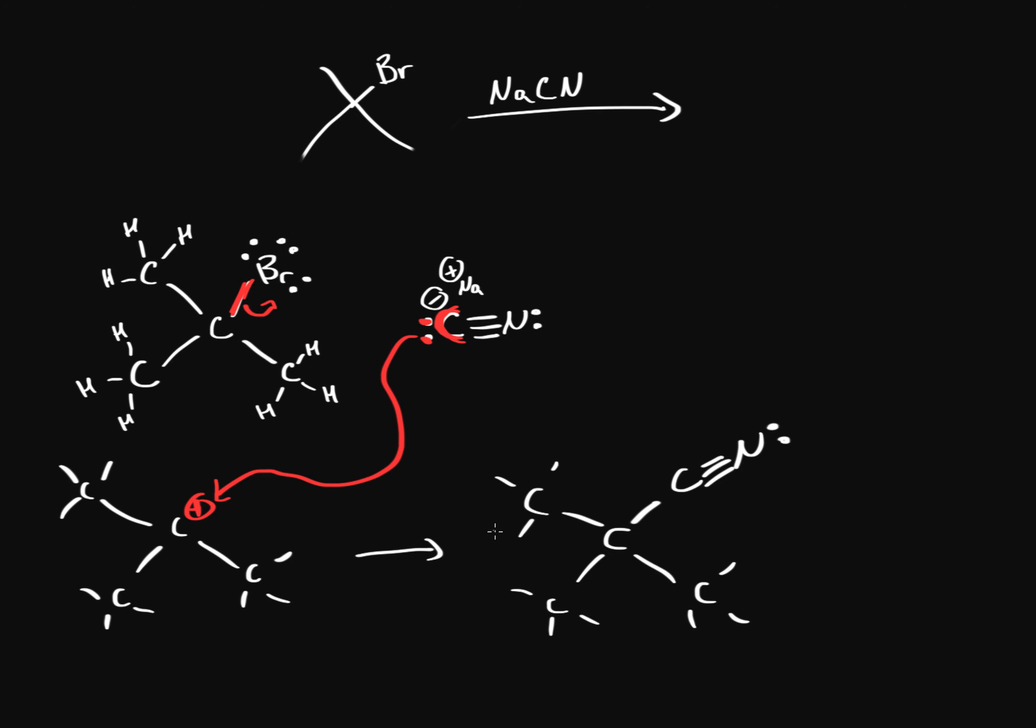So that's the SN1 mechanism—it's a two-step reaction and the rate of this mechanism only depends on the substrate, on the stability of the substrate. As you've noticed, a carbocation requires electron donating groups like carbons over here. These carbons will be electron donators; they'll support electron density for this carbocation, so the more substituted a carbocation is, the better.